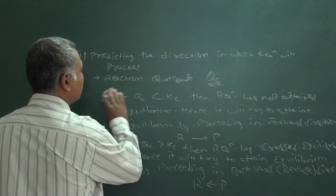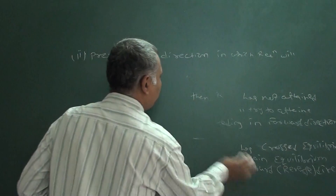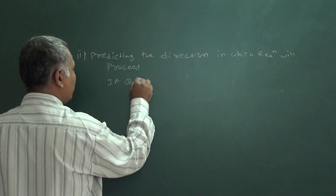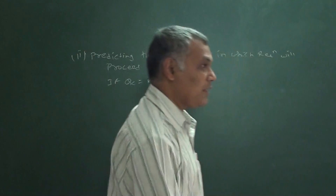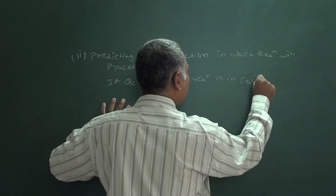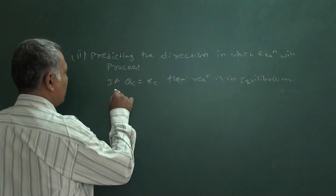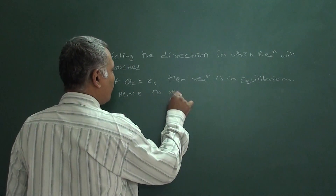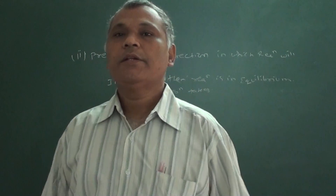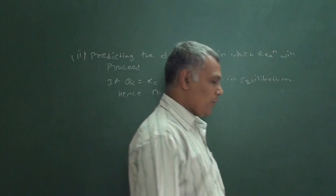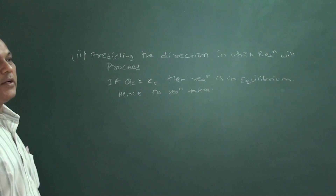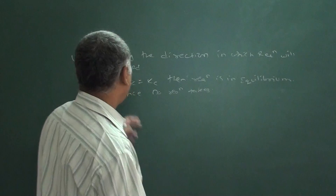The third condition: if Qc equals Kc, the reaction has attained equilibrium. No further net reaction takes place - neither reactants convert to products nor products convert to reactants. The system remains stable. This is how we predict whether the reaction will go forward, reverse, or is at equilibrium.